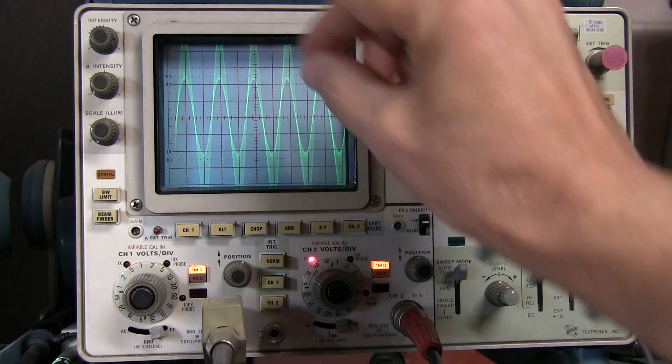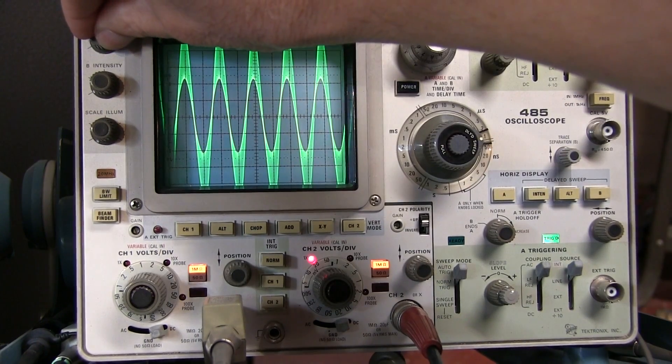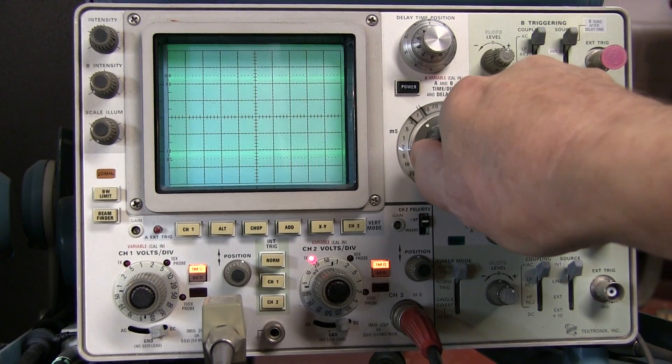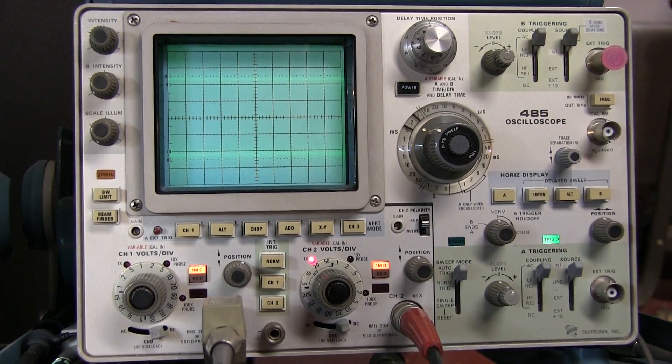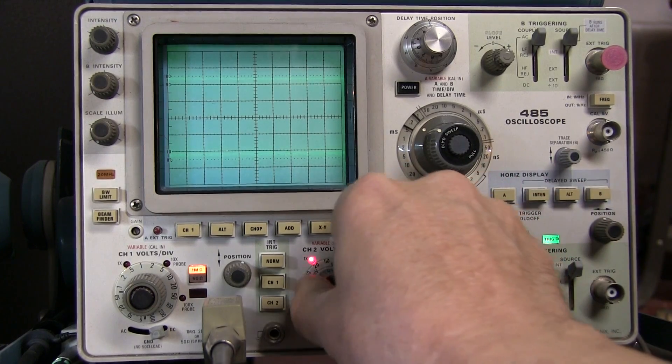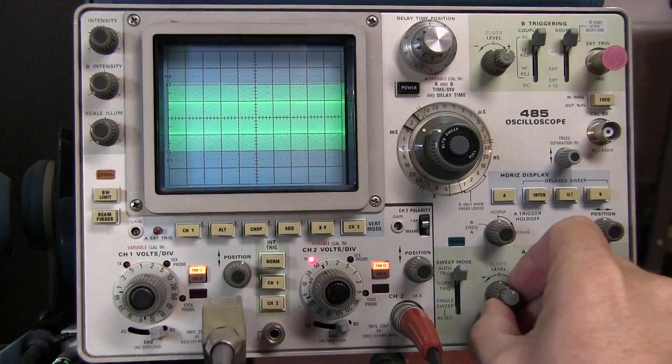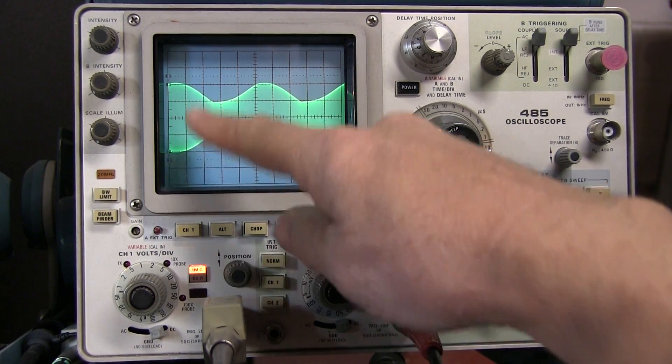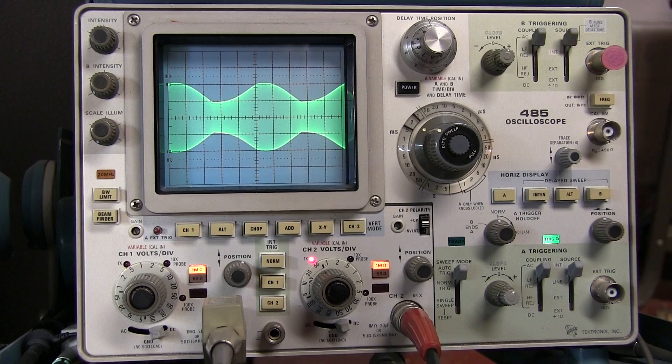But if we actually want to view what that is doing, we're going to have to slow the time base down so we can actually see the envelope of the modulation. I'm also going to reduce the amplitude a little bit here and adjust the triggering. And if we carefully adjust the triggering, we can get a nice stable waveform of the modulated RF envelope.